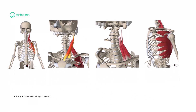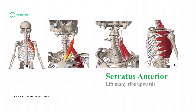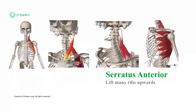This is the serratus anterior. Serratus anterior is going to help move the ribs up as well. These are all the muscles of forced inspiration.